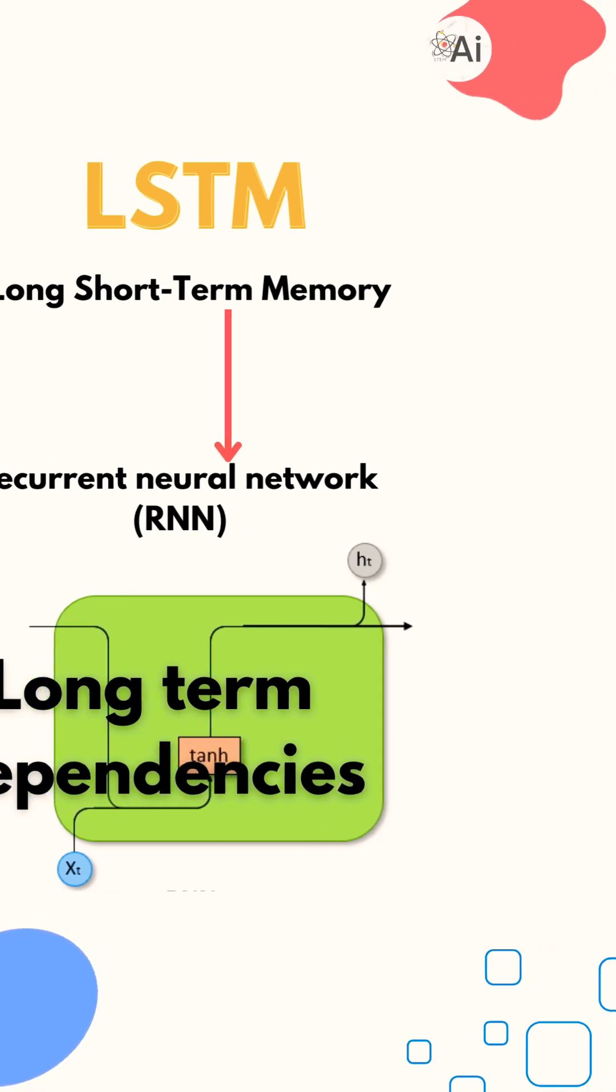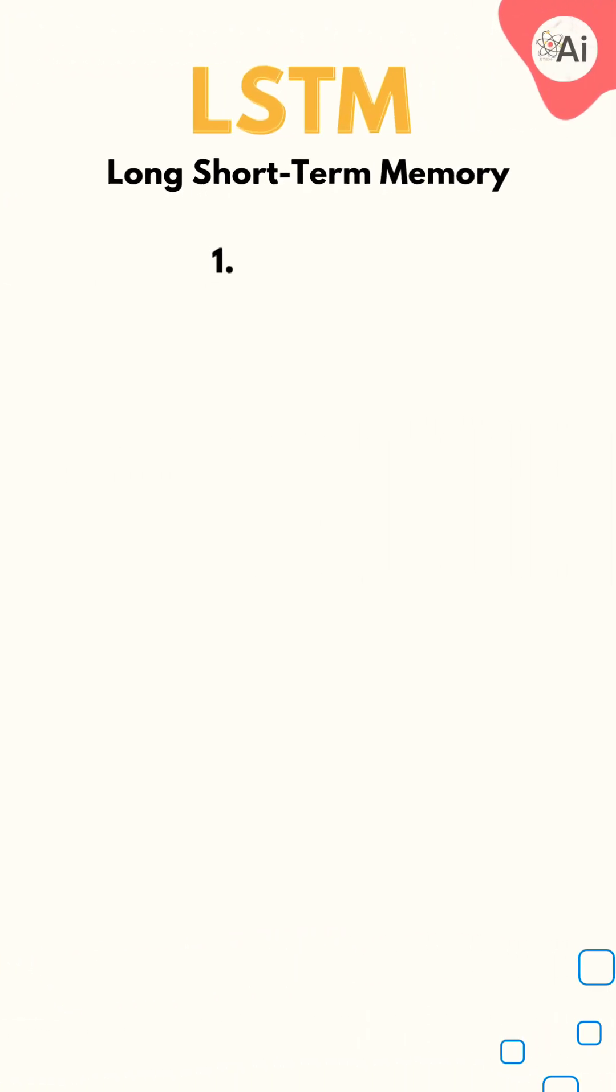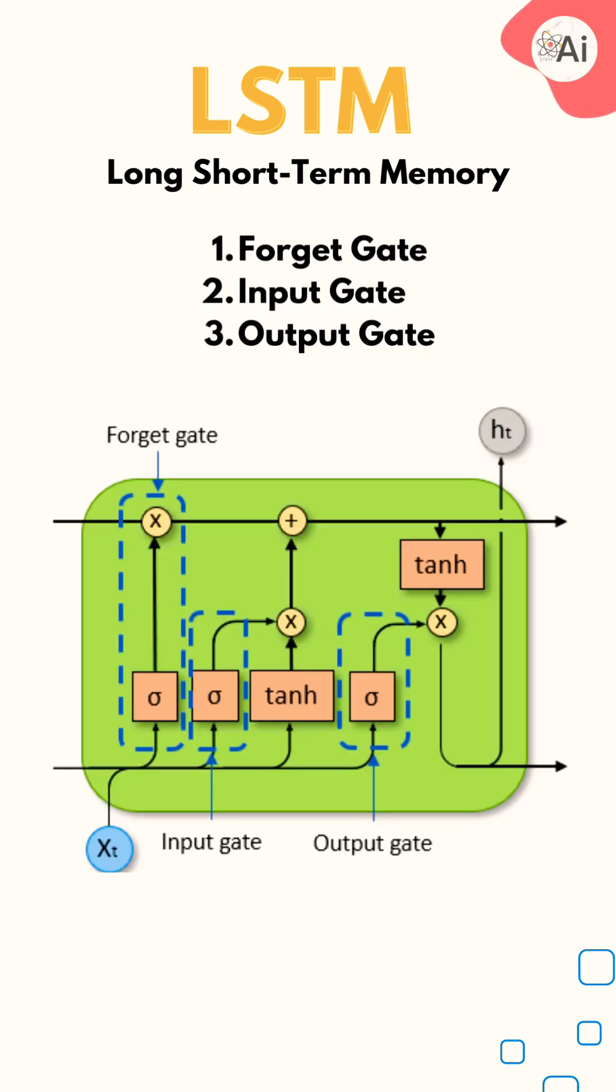LSTM networks achieve this by using specialized gates, which control the flow of information within the network. These gates are fundamental to understanding how LSTMs work.